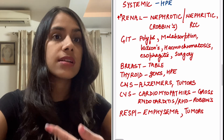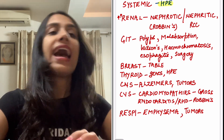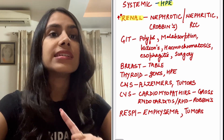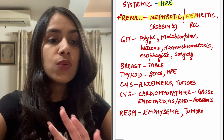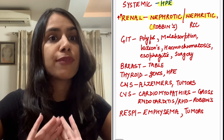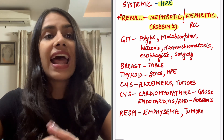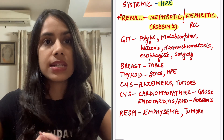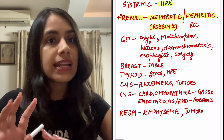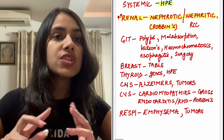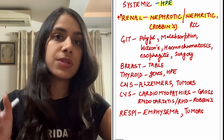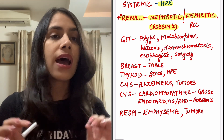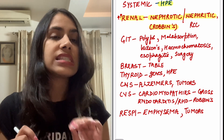In systemic path, histopath is tested a lot. If there is one unit you simply cannot miss in systemic path, it is renal. The nephrotic-nephritic table from Robbins is a must-do — you have to see the light microscopy images as well because they are tested. Electron microscopy findings also come, but images as such are not tested in NEET PG as much — more for INI-CET. But that entire table you have to have by heart; go having seen it.